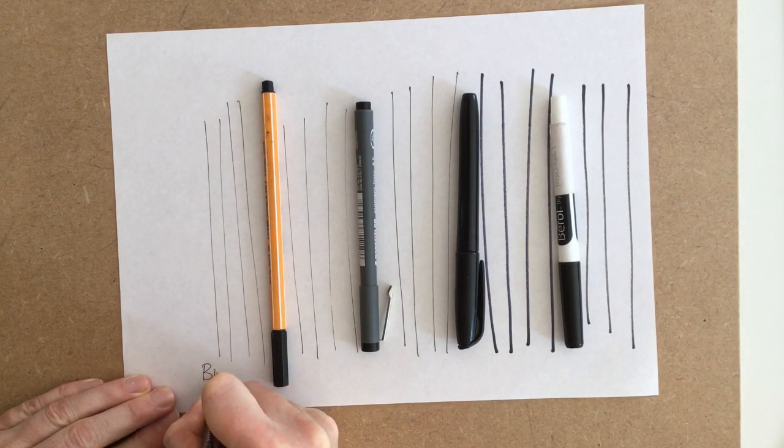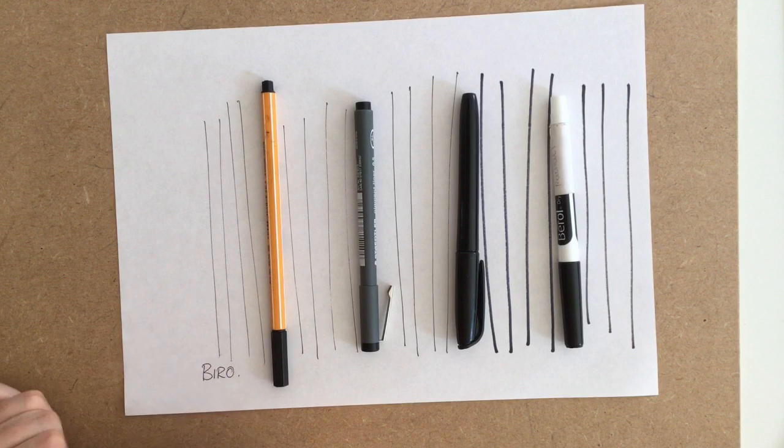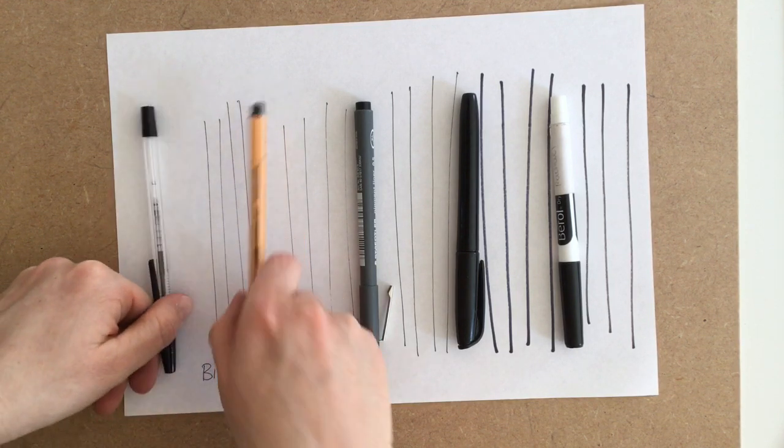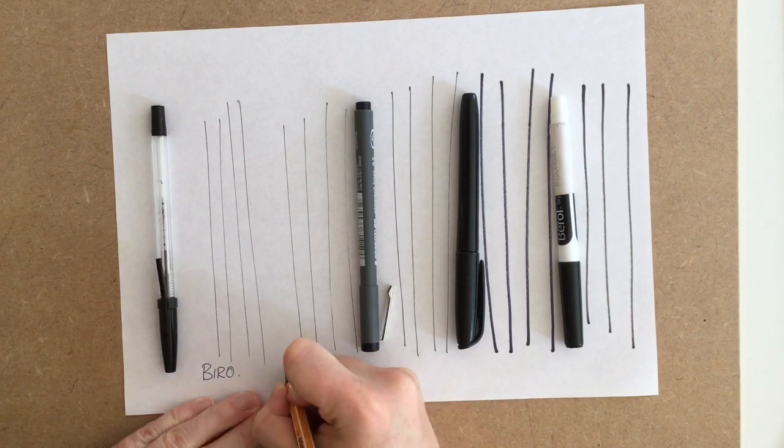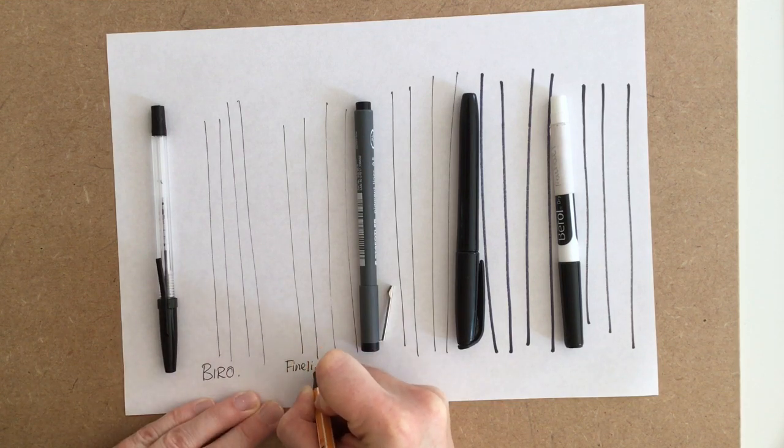Here I've got some pens laid out for you to see. This is just a random selection of pens that I've got in my house. I'm going to be sketching mostly with the biro and later on I'll be using one of the thicker pens.